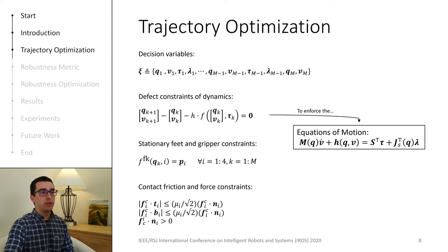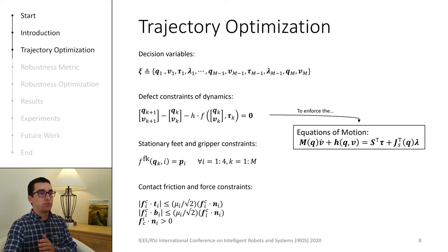In order to plan whole body dynamic motions, we use trajectory optimization. Our framework implements a method called direct transcription. This method works by converting the original motion planning problem, which is continuous in time, into a version that is discrete in time. For that, we divide the trajectory into a finite set of points. And for each point, we describe both the system state and the control inputs.